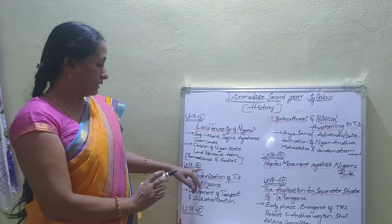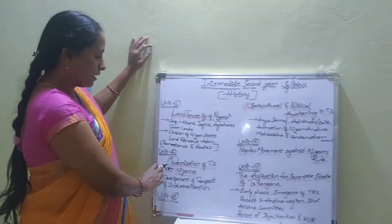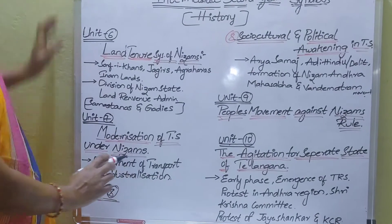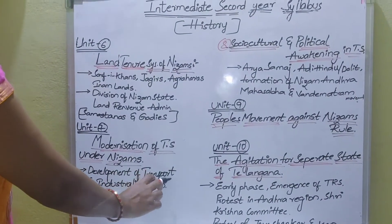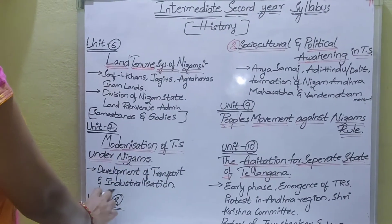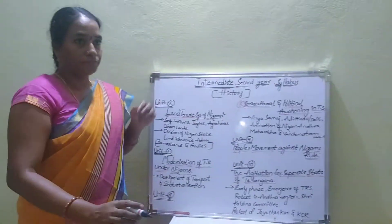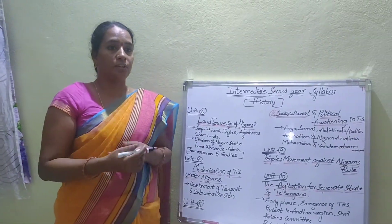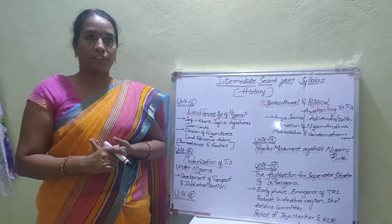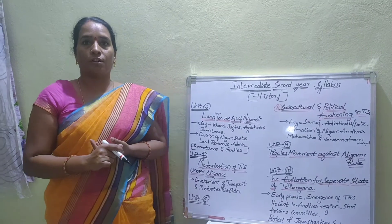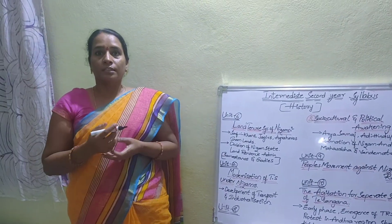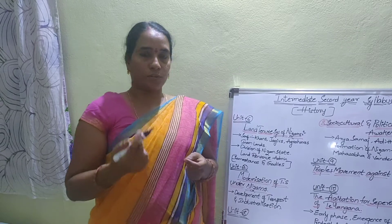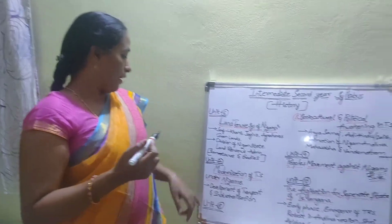The seventh unit is the modernization of Telangana under the Nizams. It covers the development of transport and industrialization, including the growth of railways, communication, and the introduction of modern education. Modern education is covered in this seventh unit.